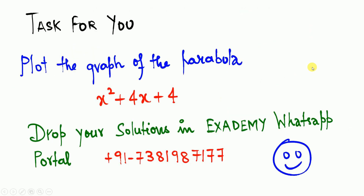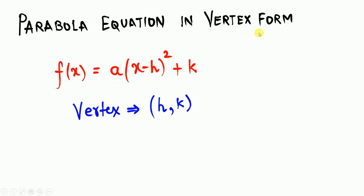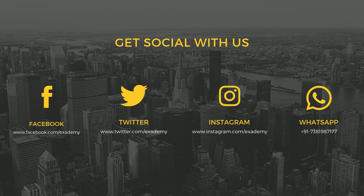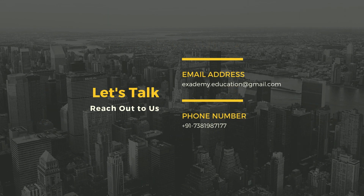Your task: solve x² = x² + 4x + 4 and drop your solutions in the Exademy WhatsApp portal. We also looked at the vertex form of a parabola: f(x) = a(x − h)² + k, where (h, k) is the vertex. Finally, parametric form: x = at², y = 2at. Stay tuned for more topics — take care, bye!